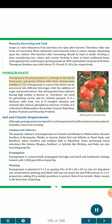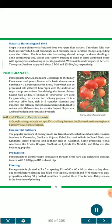Pomegranate (Punica granatum L.) belongs to family Punicaceae, genus Punica, with basic chromosome number x=12. Pomegranate is a juicy fruit which can be processed into different beverages with the addition of sugar and preservatives. Sun-dried grains from cultivars having high acidity are known as anardana and are used for garnishing curries and for culinary purposes. It is a delicious table fruit, rich in B-complex vitamins and minerals like calcium, phosphorus and iron. In India, it is cultivated in Maharashtra, Karnataka, Gujarat, Rajasthan and Andhra Pradesh. Commercial Cultivars: The popular cultivars are Ganesh and Musket in Maharashtra, Bassein Seedless in Karnataka, Dholka in Gujarat, Kabul Red and Velodu in Tamil Nadu, and Kandhari, Jalor Seedless and Jodhpur Red in Rajasthan. Some promising clonal selections like Arakta, Bhagwa, Sindhuri or hybrids like Mridula and Ruby are also becoming popular.